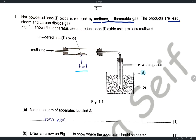Here we have a diagram representing the apparatus used to reduce lead oxide using excess methane gas. Methane is introduced from one end; inside the tube we have the hot lead oxide powder. The gases produced pass through a tube at point B in the ice bath, and waste gases are released from the other end.